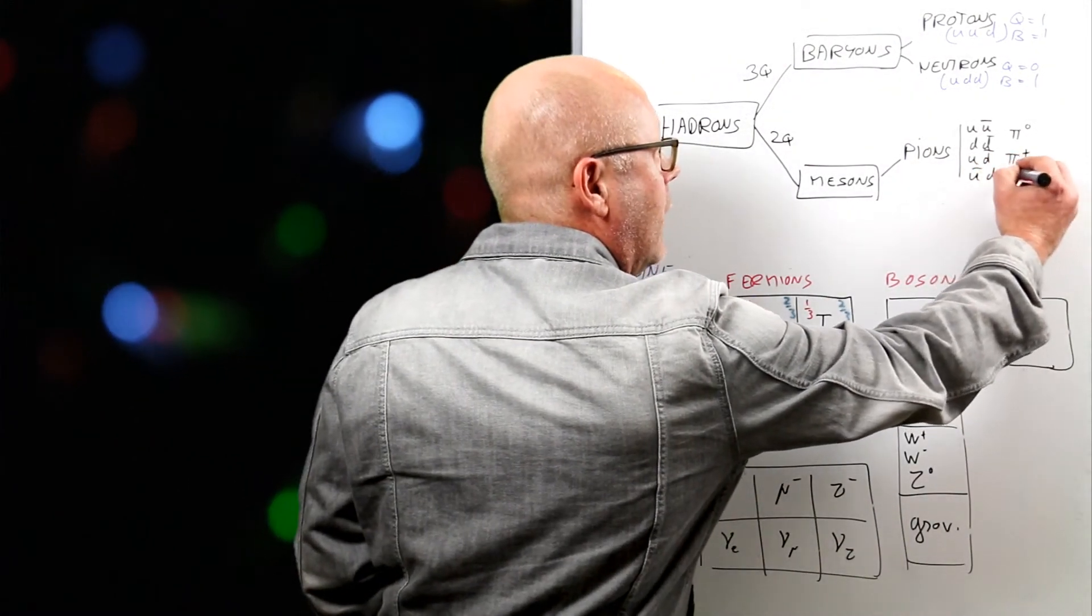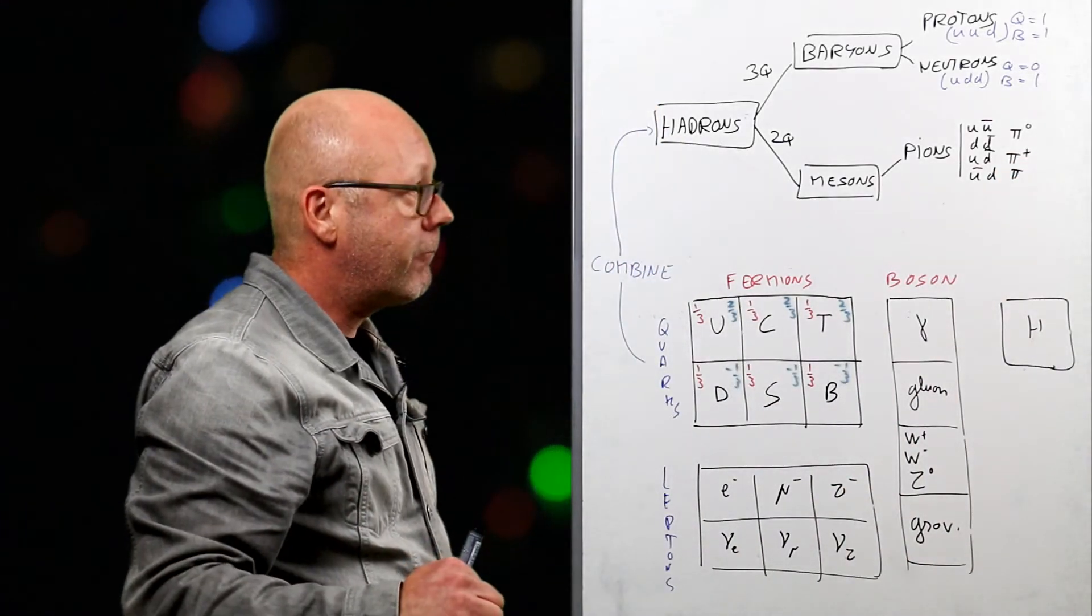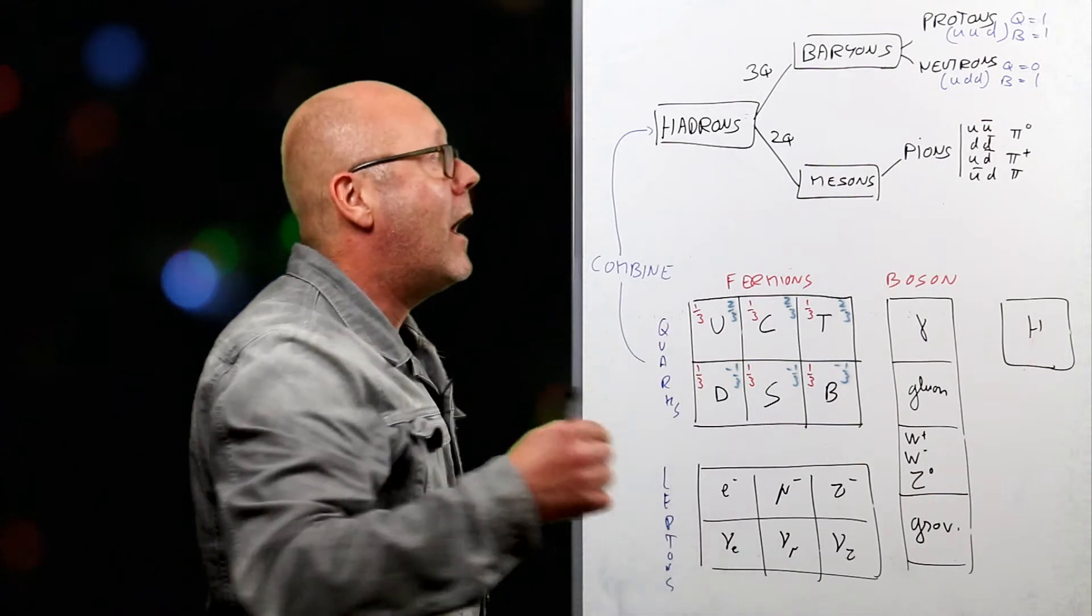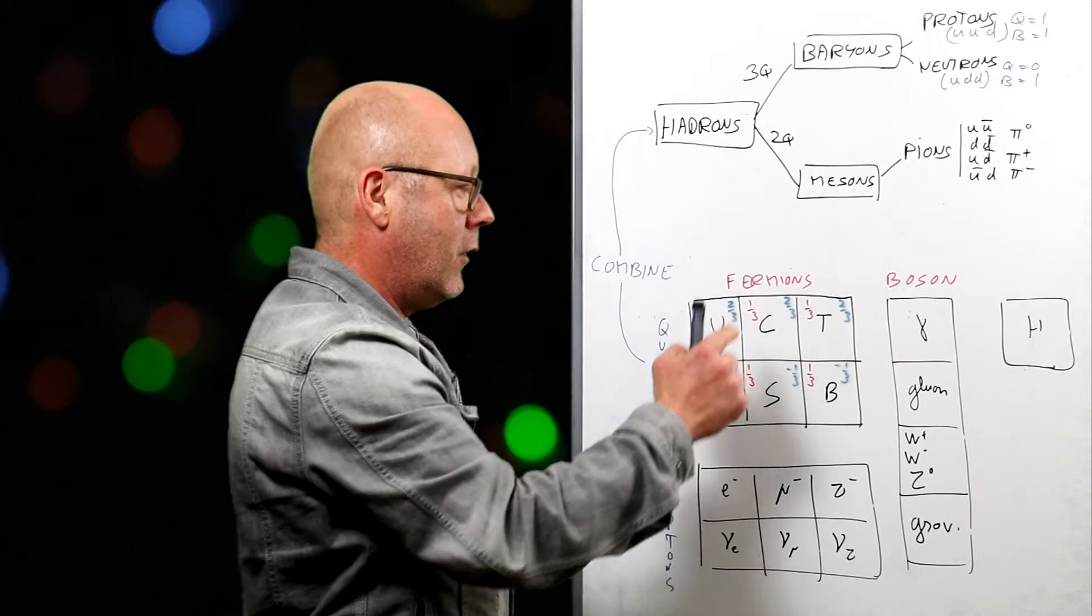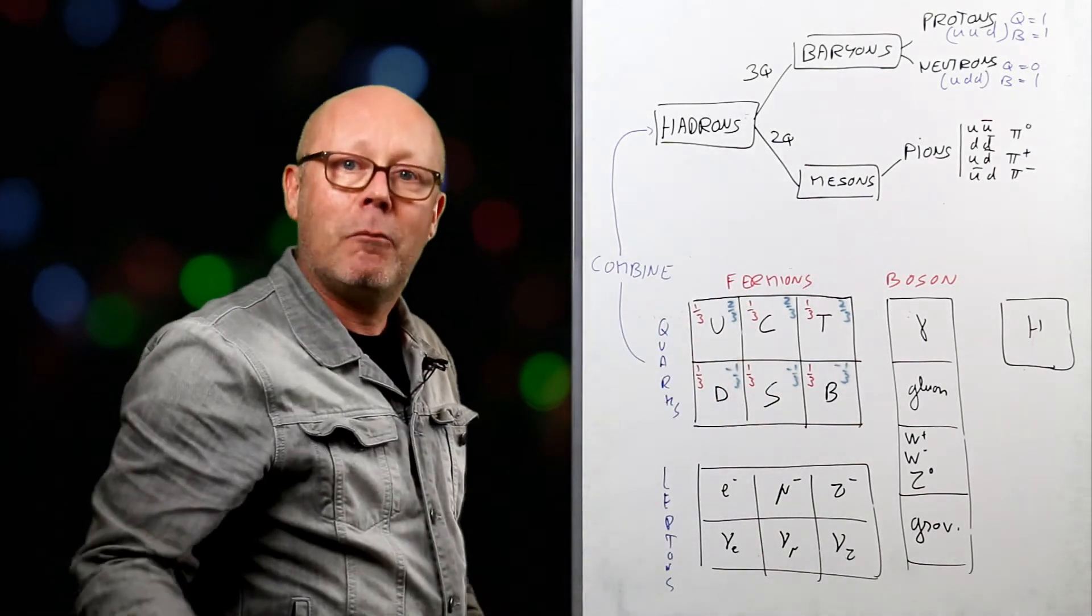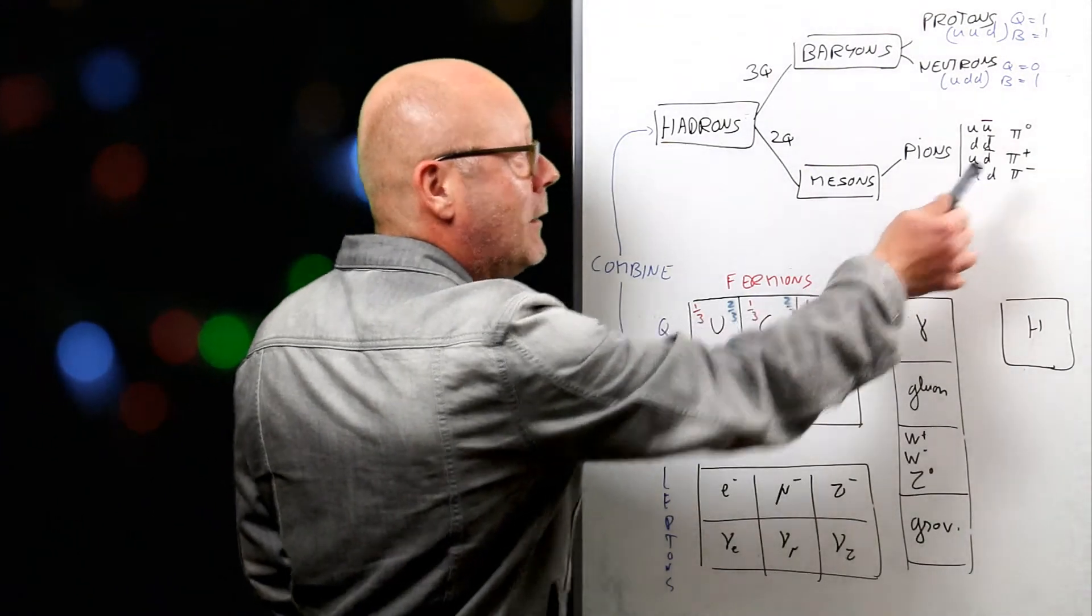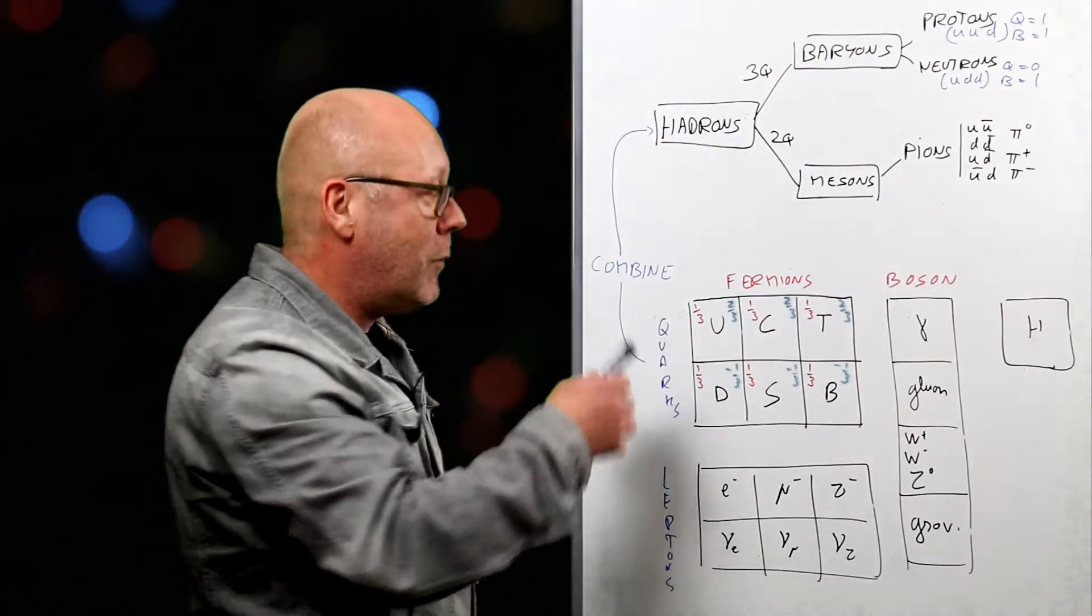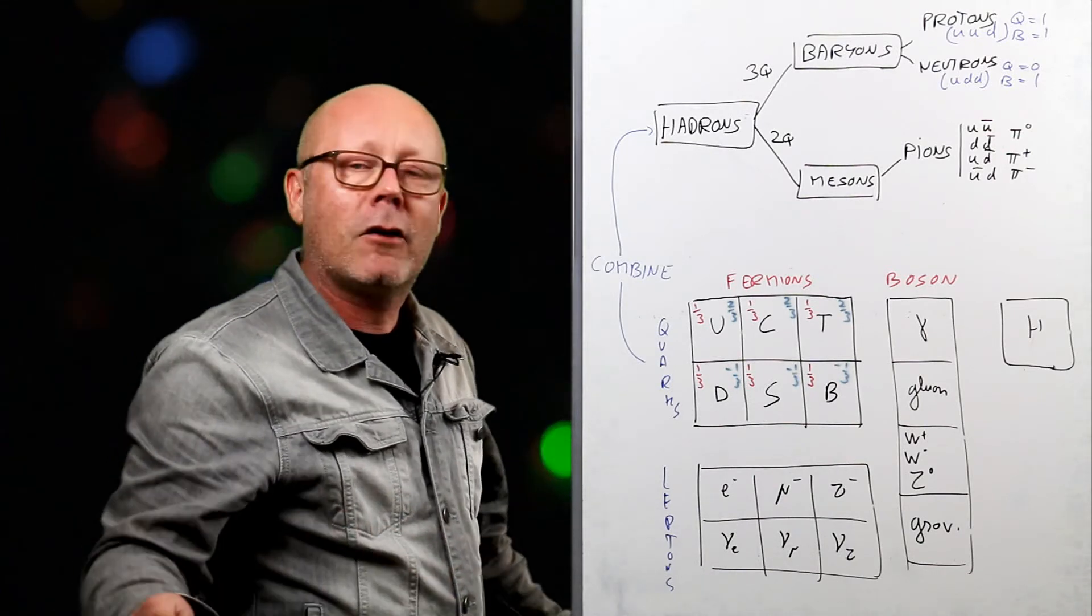Also, I could have an anti-up and a down, and I would get, try to guess it, yes, a pi minus, because I have minus two thirds minus one third in charge, so minus one. And you see, the baryon numbers, because I have matter and anti-matter, it's going to be one third minus one third each time, giving me a baryon number of zero.